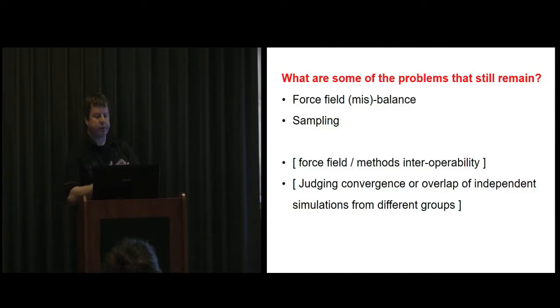We still have these issues with force field misbalance, issues with sampling. One interesting example is with the DNA, where the question is do you put restraints so you can't do terminal base pair opening, or can you run long enough to fully sample that base pair opening? That's going to require tens of milliseconds. In real life, if you're going to look at SAXS data, which is X-ray crystallography analysis, that fraying is going to contribute to the SAXS signal, so you would want to include that. But we can't fully sample it yet.